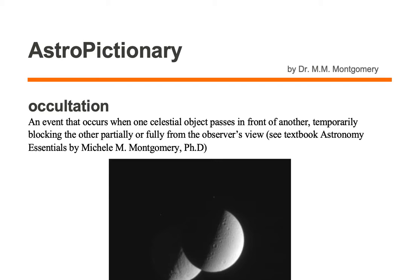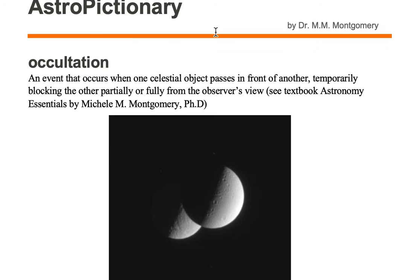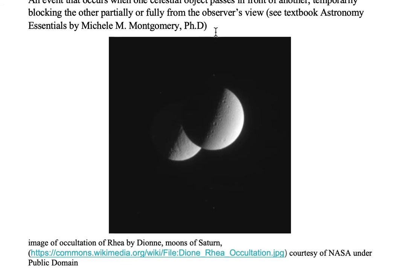Occultation is an event that occurs when one celestial object passes in front of another, temporarily blocking the other partially or fully from the observer's view. Let's take a look at an occultation event.